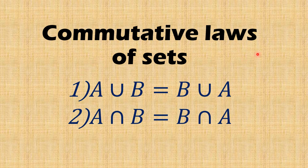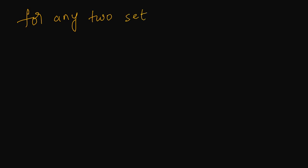Hello students, let us start with the commutative law of sets. What does it mean by commutative law? If you take any two sets, A union B is nothing but B union A, and A intersection B is nothing but B intersection A. In today's class, let us see how to prove the commutative law. Let us consider two non-empty sets A and B.